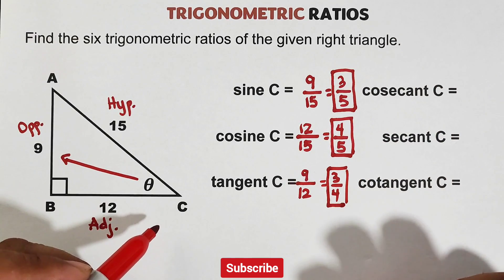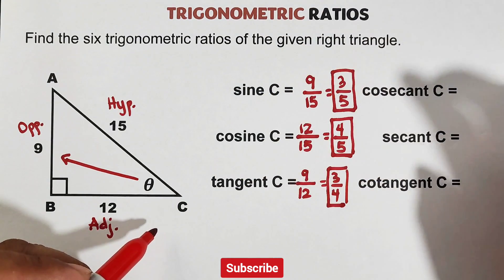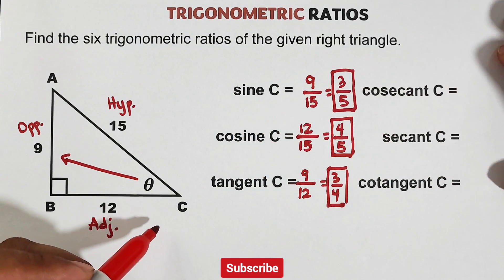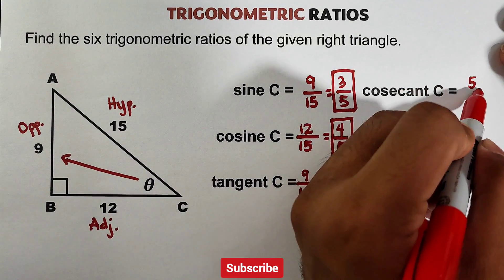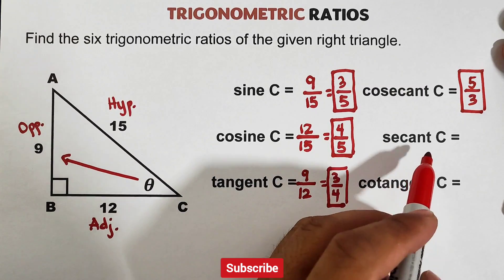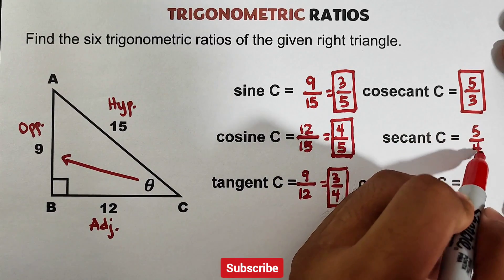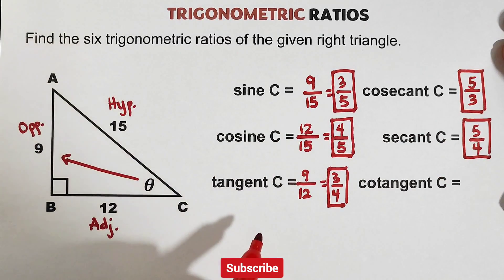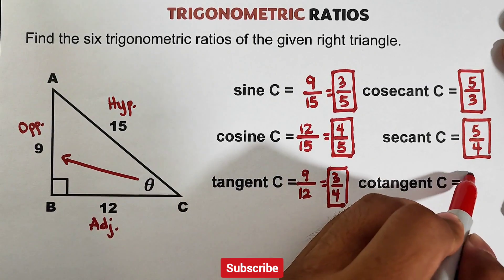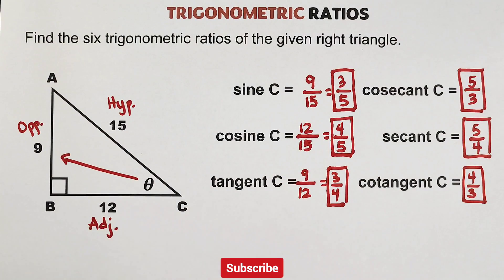For the remaining three ratios, we use the reciprocal relationships. Cosecant is the reciprocal of sine — if sine C is 3 over 5, then cosecant C is 5 over 3. For secant, the reciprocal of cosine — cosine is 4 over 5, so secant is 5 over 4. And lastly, cotangent, the reciprocal of tangent — tangent is 3 over 4, so cotangent is 4 over 3. As simple as that!